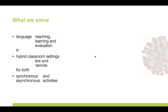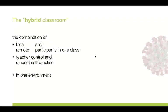Live Queue is really oriented to speaking language activities, learning and evaluation in a setting where students can be in the classroom and outside it — for synchronous activities where everyone is together at the same time, as well as asynchronous activities where students can do exercises and train themselves without the teacher being available. The hybrid classroom here means the combination of local and remote participants in one class.